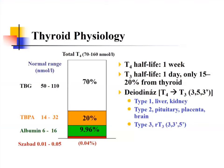Deiodinases are located in different organs, allowing peripheral regulation of thyroid function. Type 1 is in the liver, making the active form; others are in the pituitary, placenta, and brain, regulating basal metabolic rate. The total T4 is distributed and bound to different proteins: thyroid binding globulin accounts for about 70%, and thyroid binding prealbumin and albumin also specifically bind thyroxine. Only the free form is biologically active, comprising just about 0.04% of total T4.